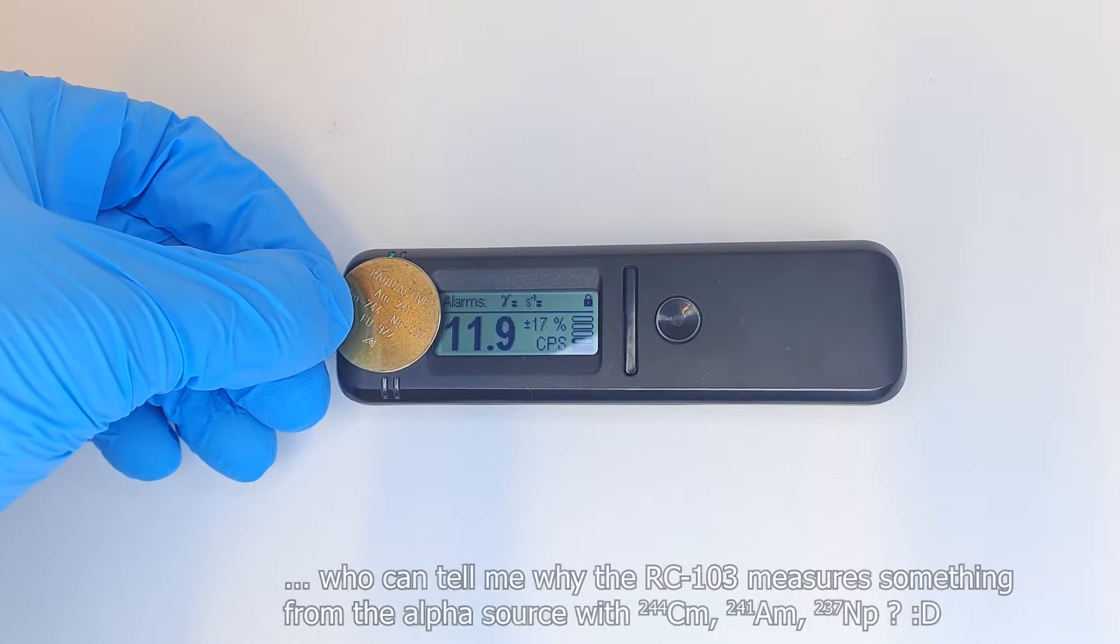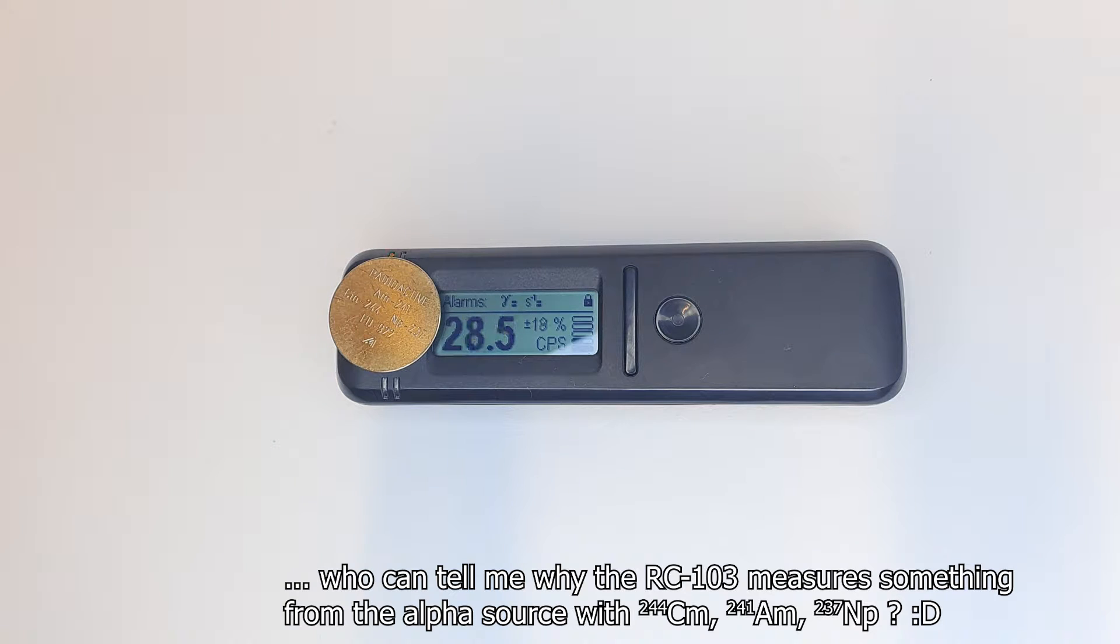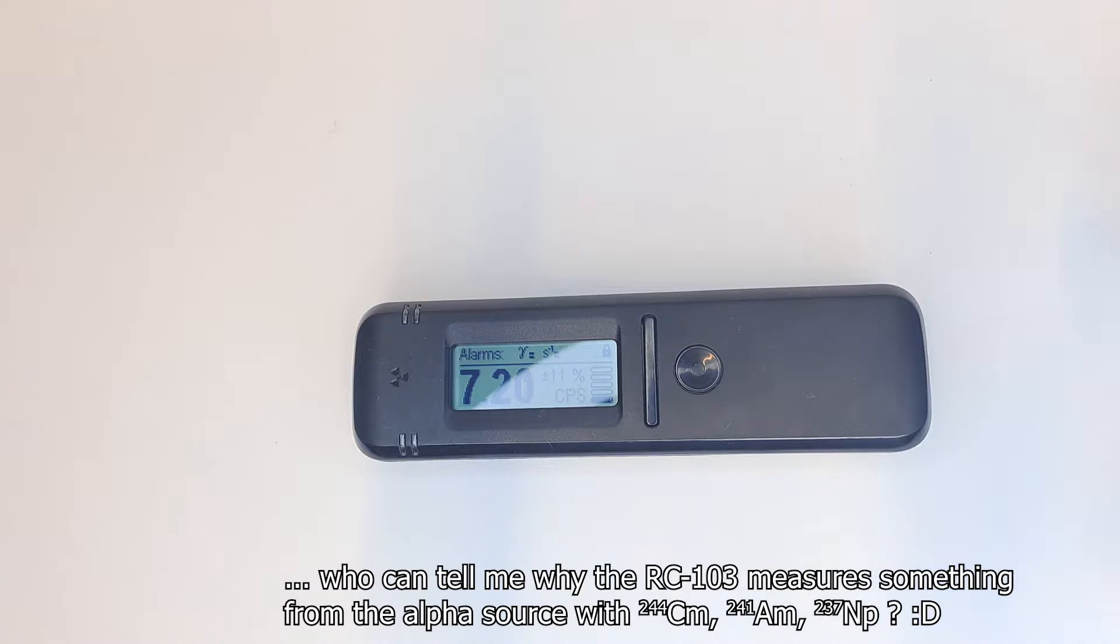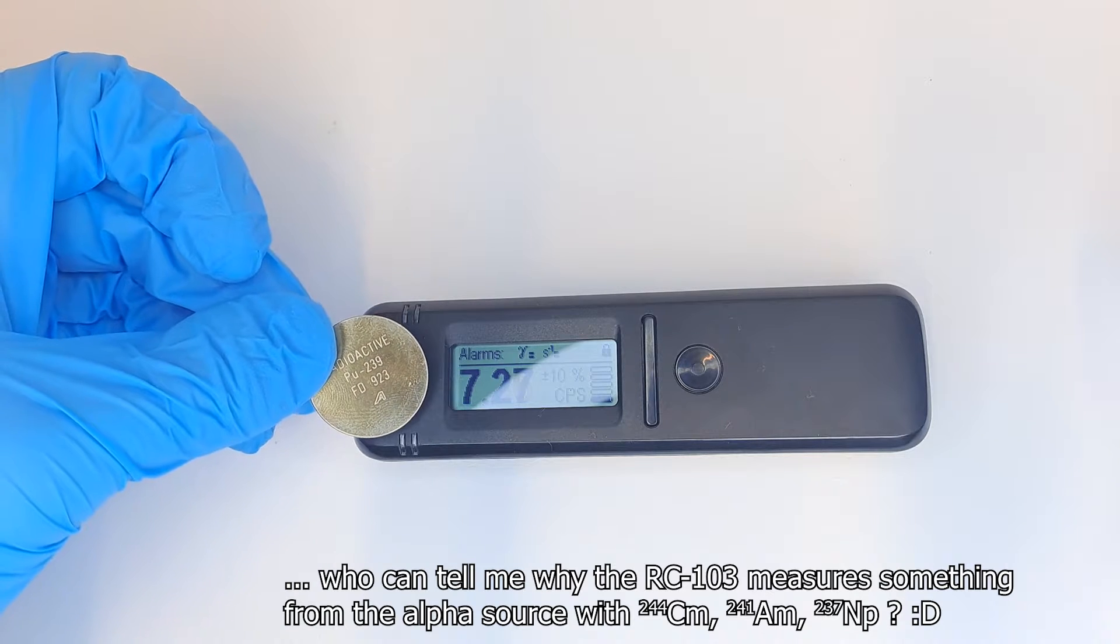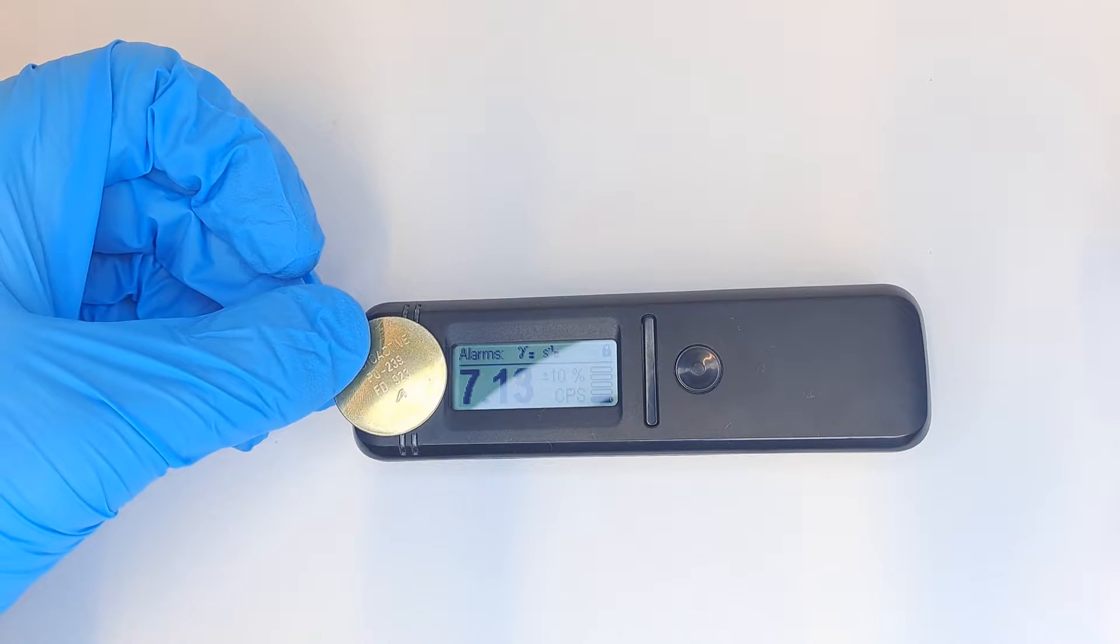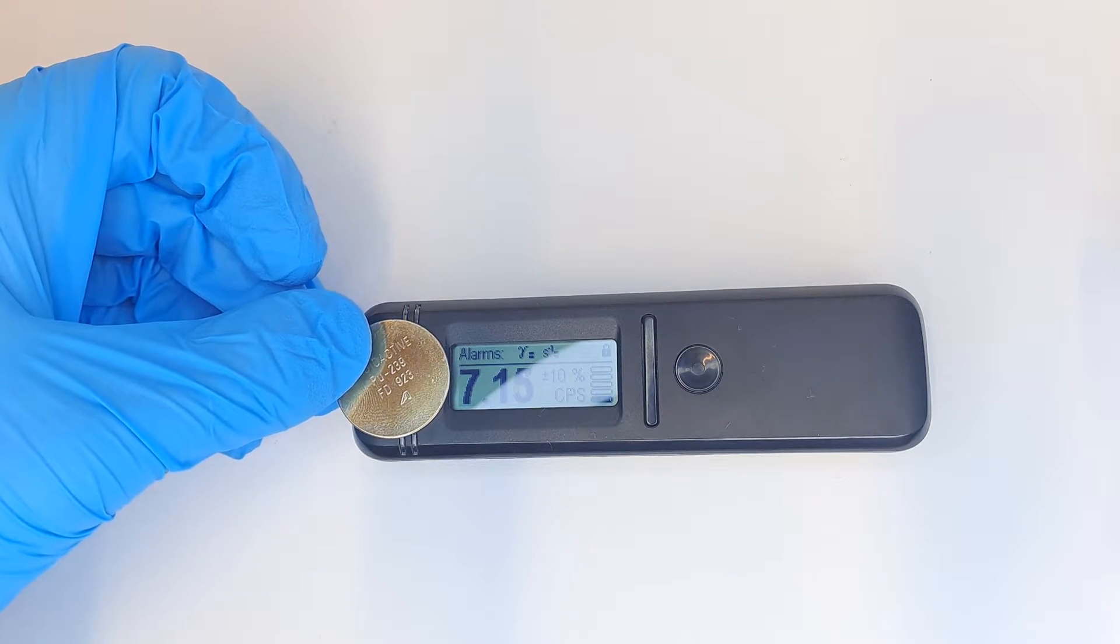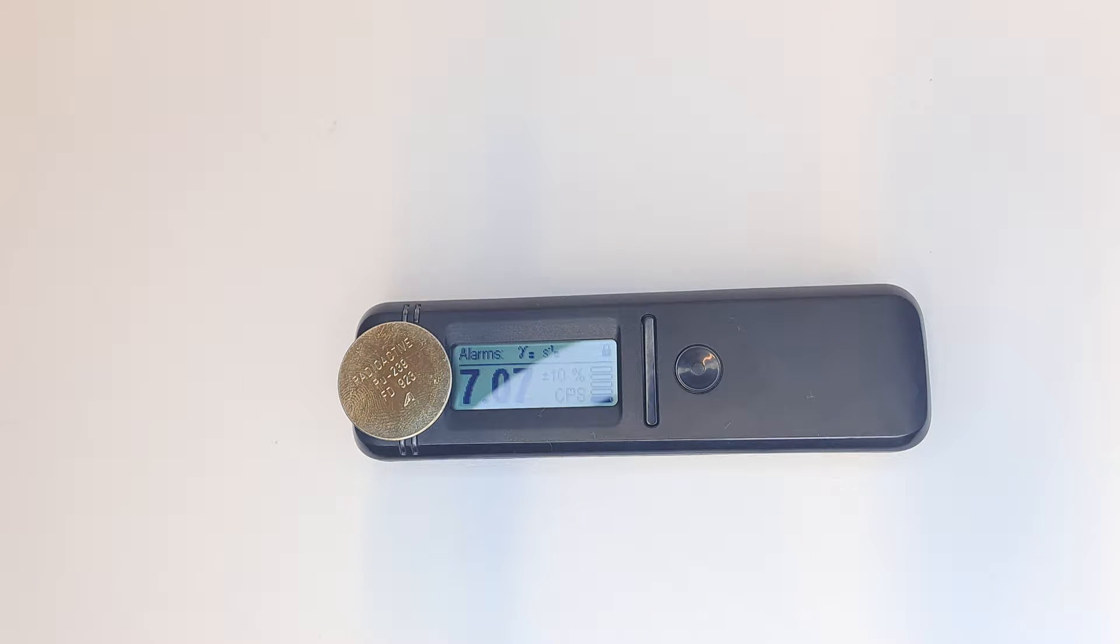A few more things before we look at the spectrum. I mean, I was clear at the start that it is intended for measuring gammas, but here's proof. Yep, it doesn't measure alphas. This is a plutonium-239 emitter with minimal contamination of plutonium-238, practically a pure alpha emitter.